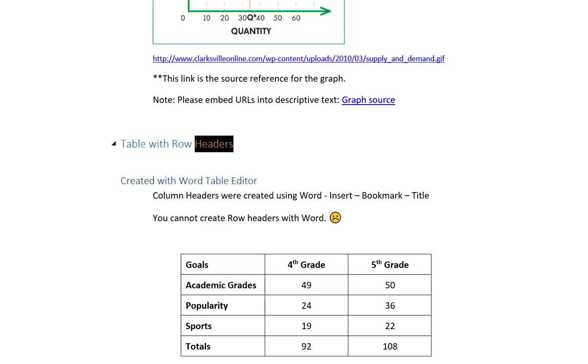Table with row headers. Created with Word table editor. Column headers were created using Word: insert, bookmark, title. You cannot create row headers with Word. Goals, 4th grade, 5th grade. Academic grades 49, 50. Popularity 24, 36. Sports 19, 22. Totals 92, 108.